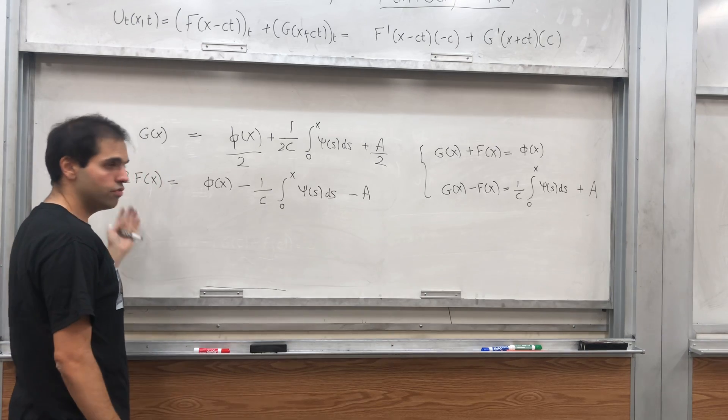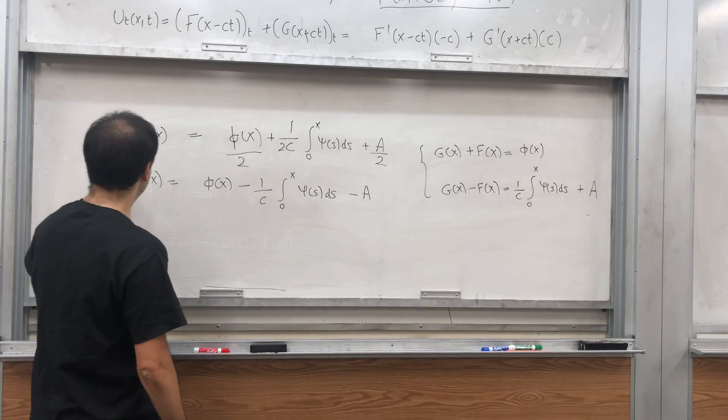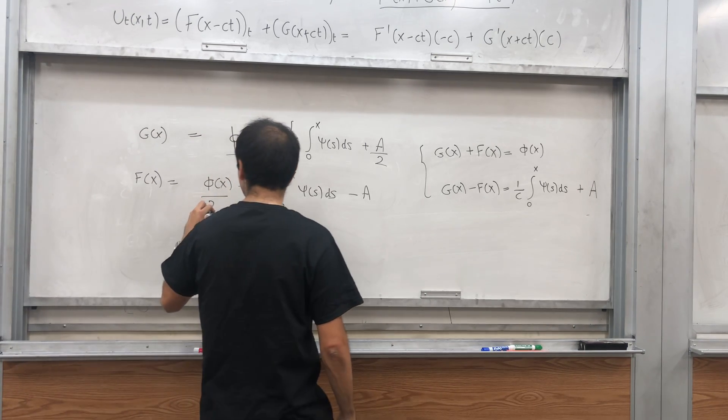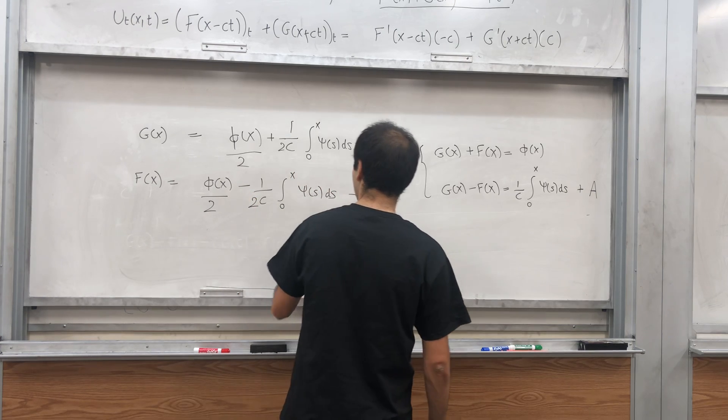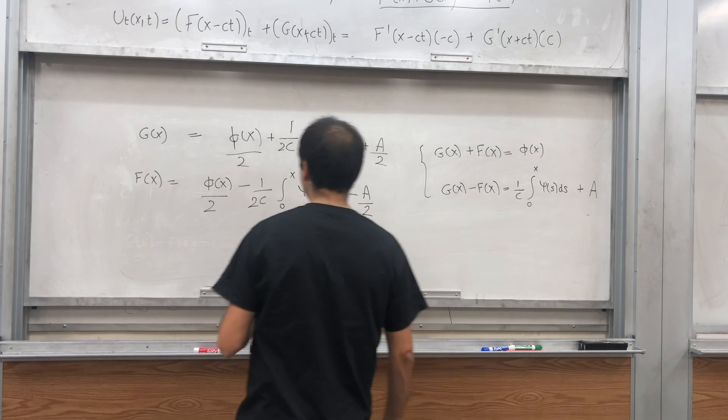And again, if you want, divide everything by two, and you get phi of x over two, minus one over two C, minus A over two.